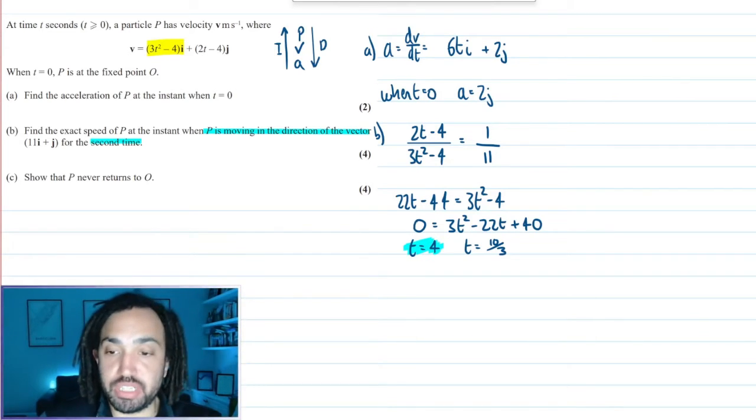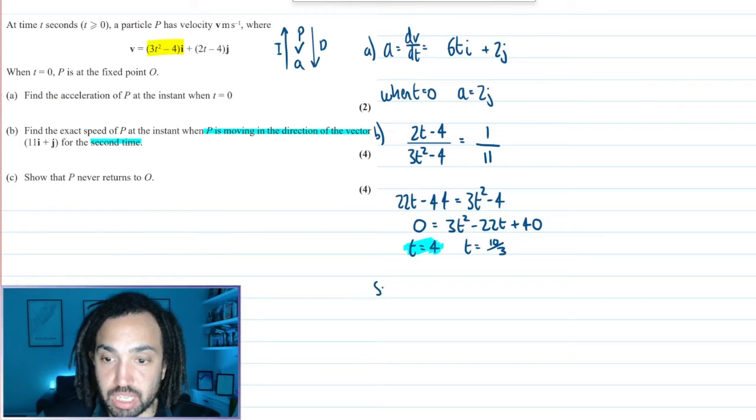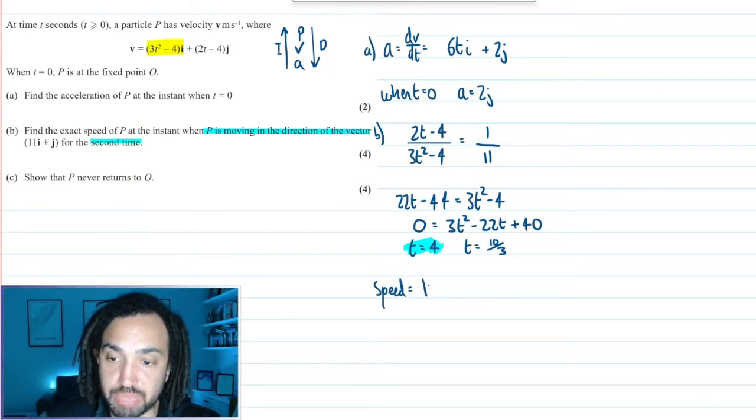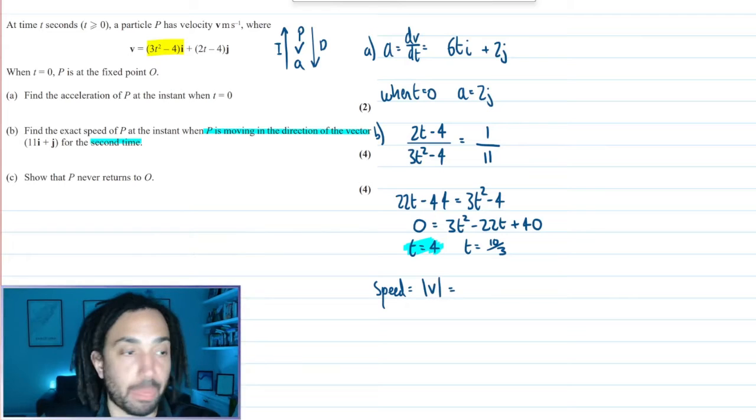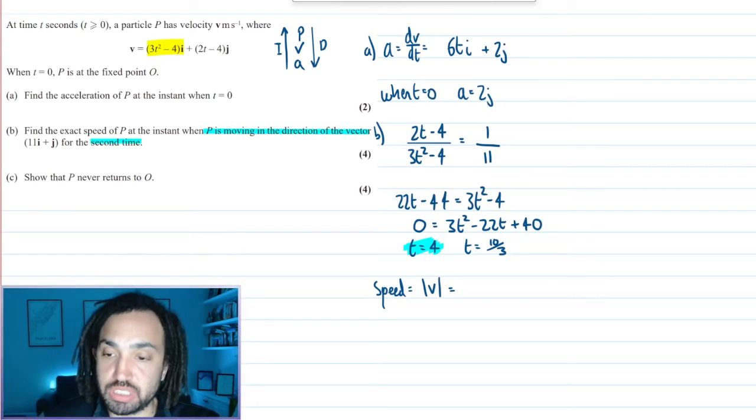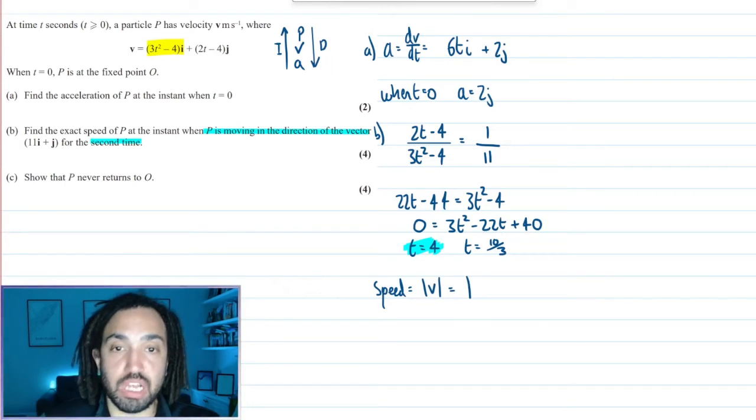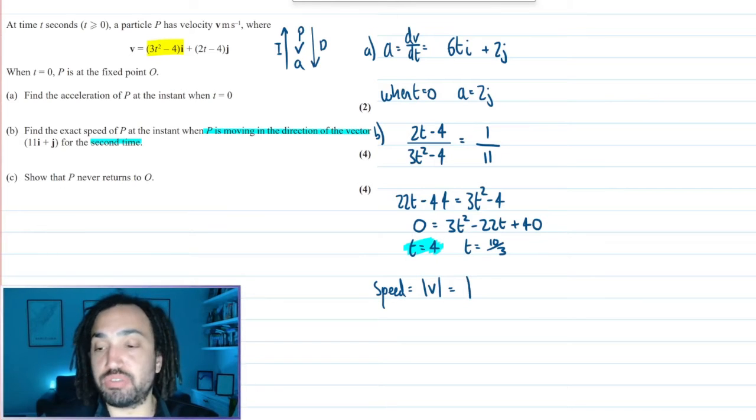So we need to find the speed. The speed is equal to the magnitude of the velocity at 4. I just need to sub t is equal to 4 into the velocity equation.